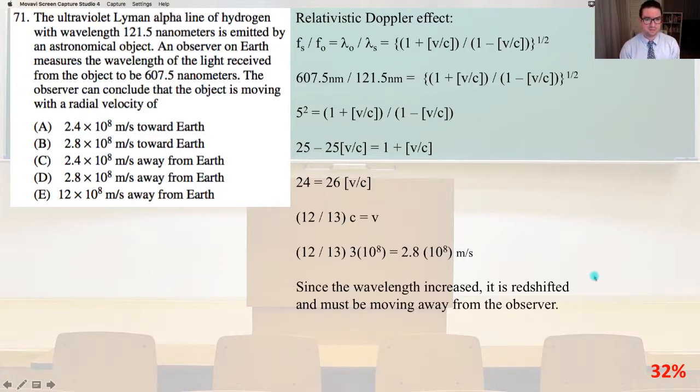So the relativistic Doppler effect where the frequency of the sender divided by the frequency of the observer equals lambda observer over lambda sender equals 1 plus the quantity V over C, that whole quantity divided by 1 minus the quantity V over C, and that quantity in the denominator square root. So 607.5 nanometers divided by 121.5 nanometers equals 1 plus the quantity V over C, that whole quantity divided by the square root of the quantity 1 minus V over C.